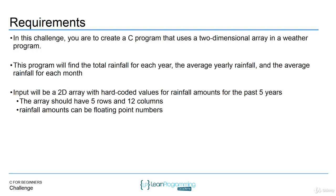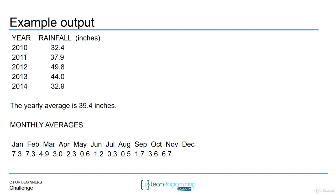The output for the program is going to look something like this. I've formatted it a certain way, but what you should first display as output is everything in the 2D array. You should have a simple loop that goes through the 2D array, displays the year for the array — the year is just whether it's the first, second, or third row, and you can just create an integer and increment it. Then the rainfall is going to be all of the rainfall for all of the months, so you have to add them as you go.